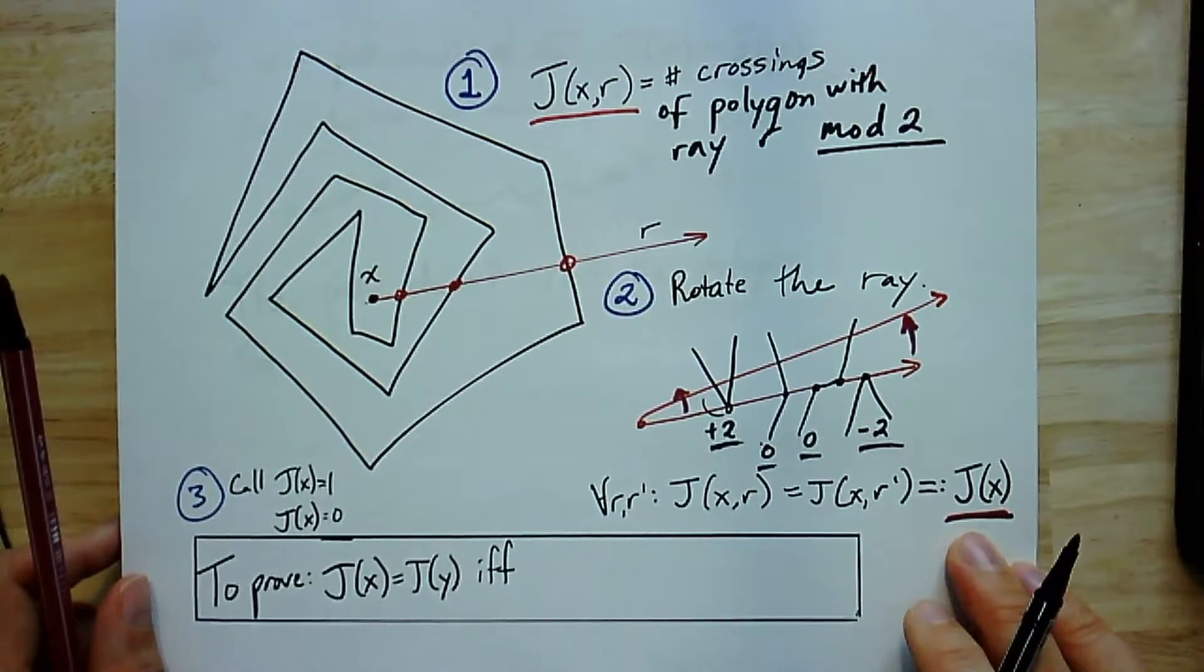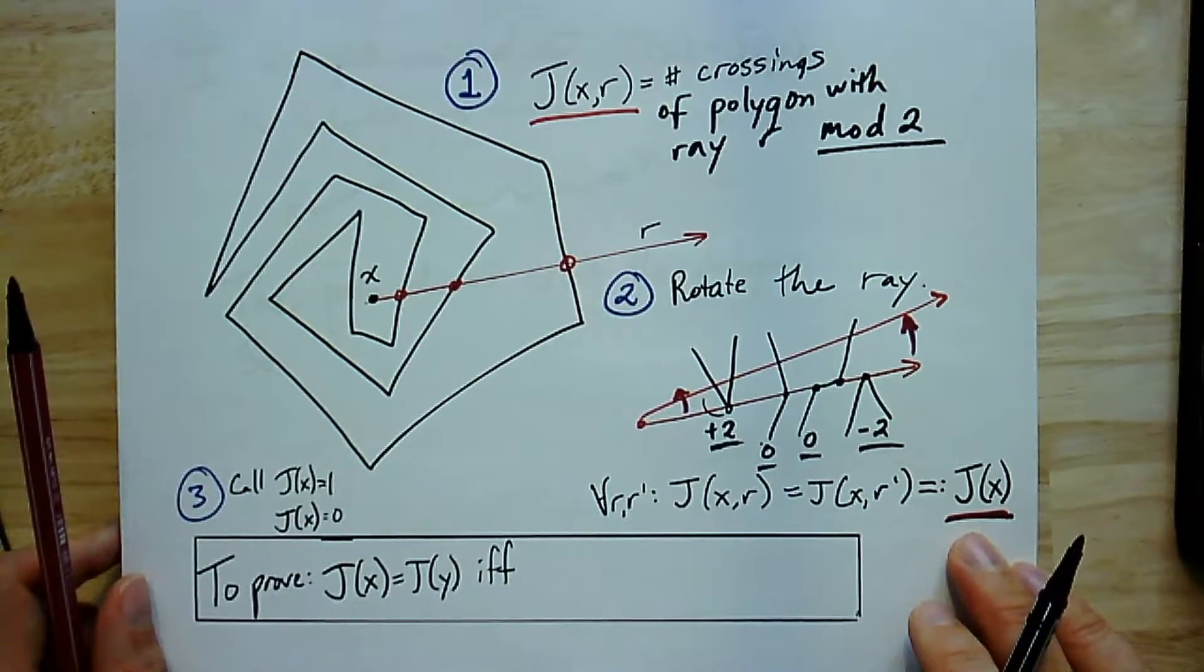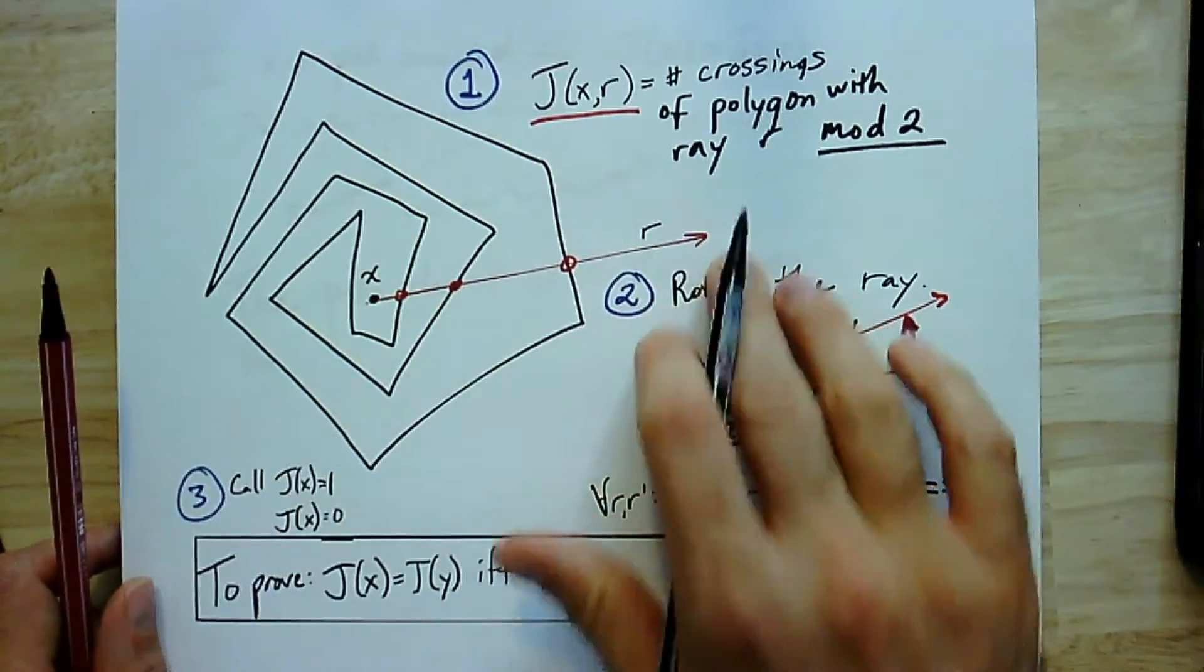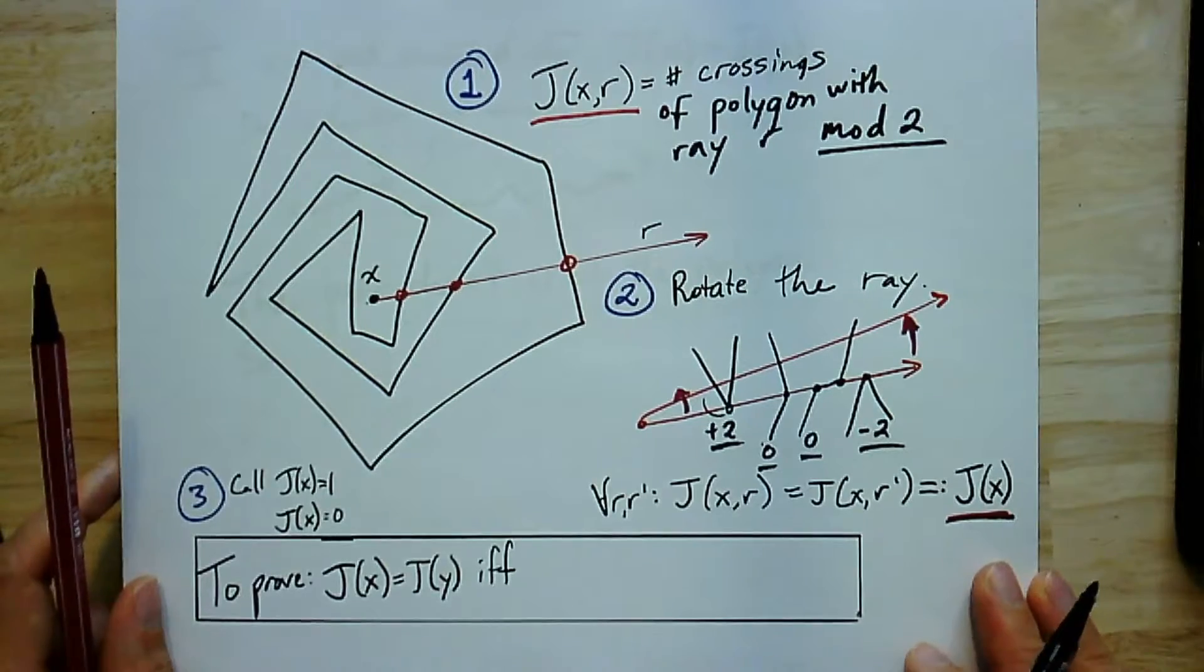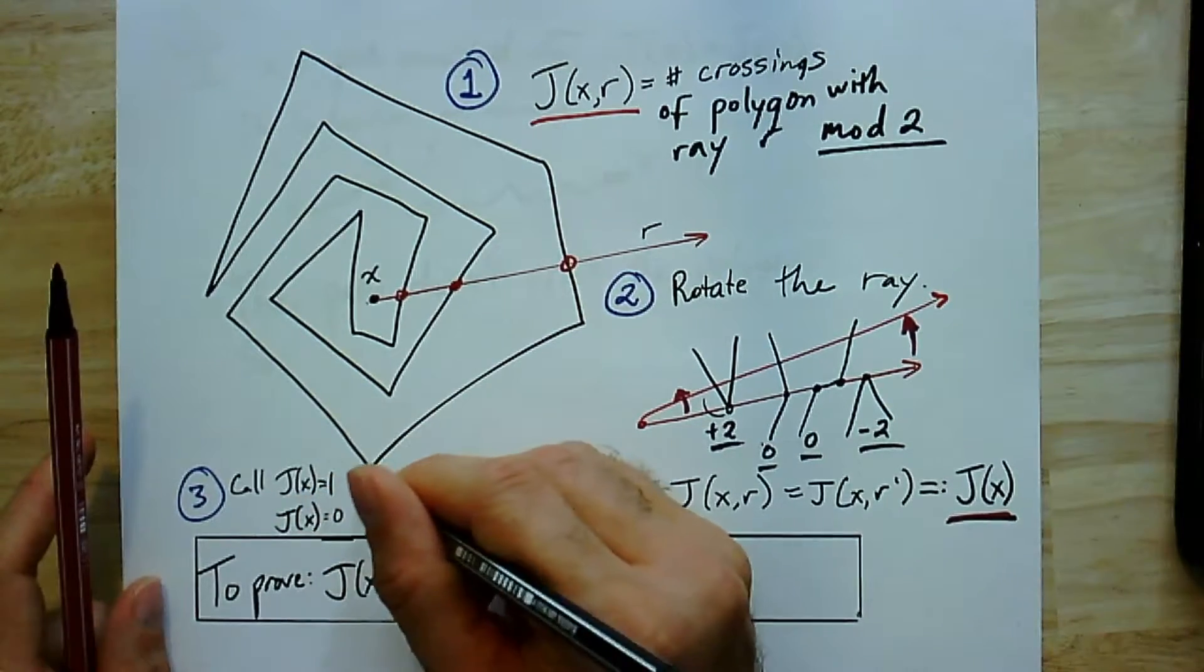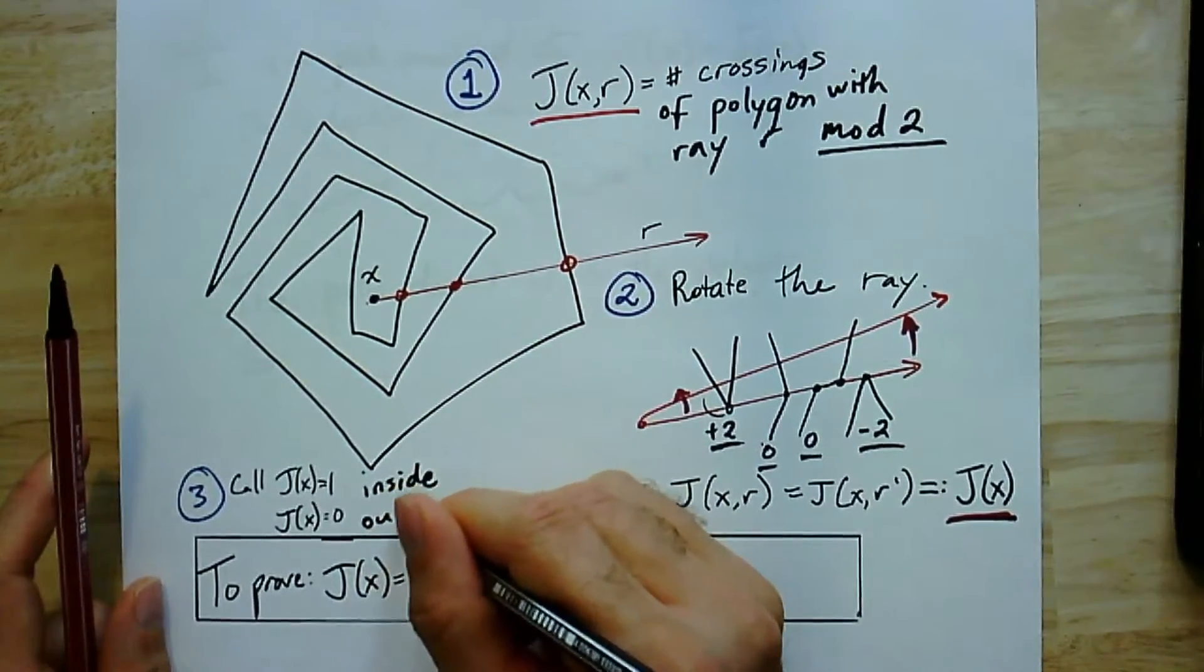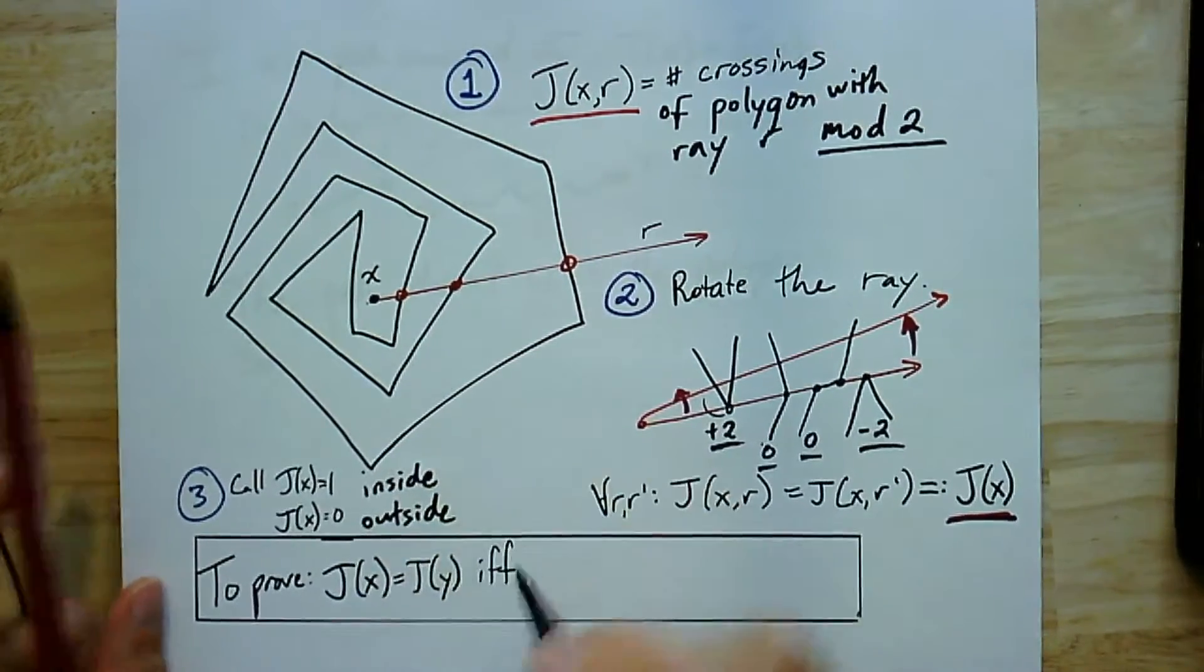And, in fact, this is even computationally how you might test if a point is inside an arbitrary polygon, is to shoot a ray and see how many edges it crosses over. Like I said, j(x) equals one, we're going to call that inside, and if j(x) is equal to zero, that's outside.